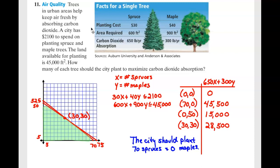So first we need to take into account the number of spruce and the number of maple. Then we need to take into account how much money we have. So a spruce is $30 and a maple is $40. So it'd be 30x plus 40y less than or equal to the $21,000 we have to spend.